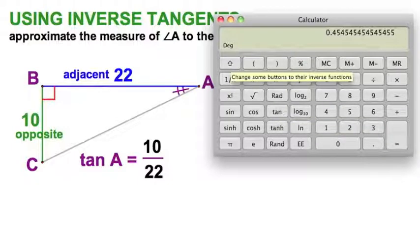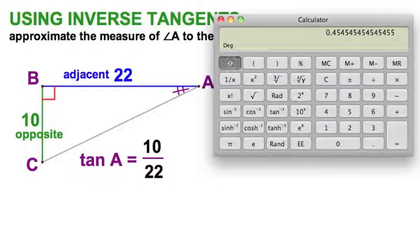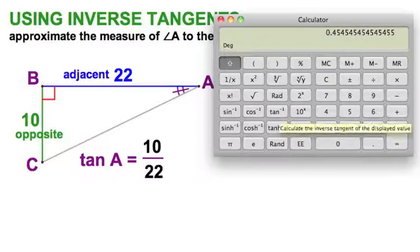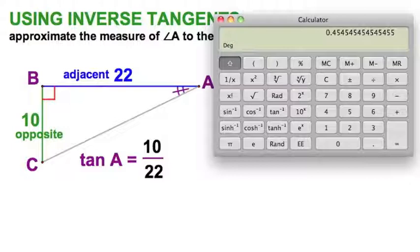I'm going to undo the tangent. This magic button here, the inverse button, gives me tan to the negative 1. Tangent to the negative 1 is the inverse tangent, and as long as I'm set in degrees will tell me the correct angle. Ready? There it is. 24 and 4 tenths. It was that easy.